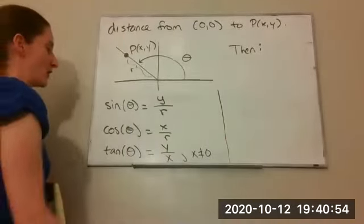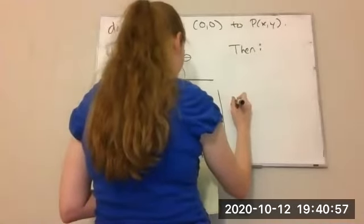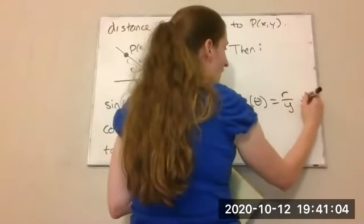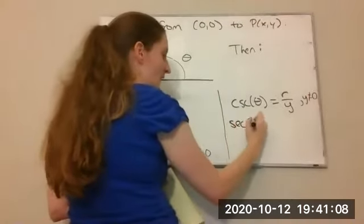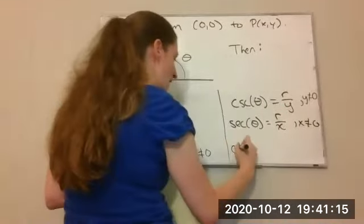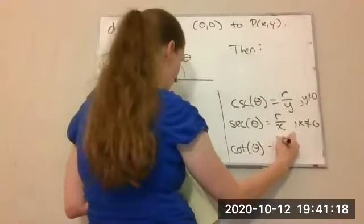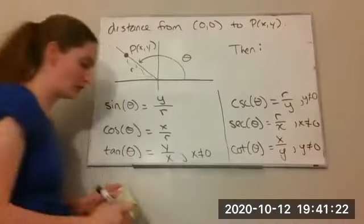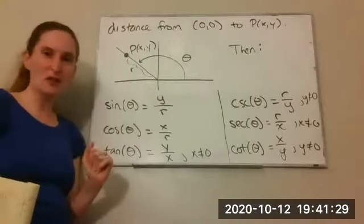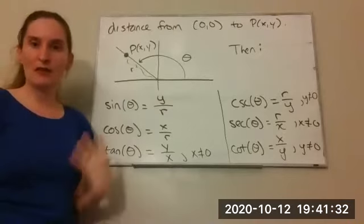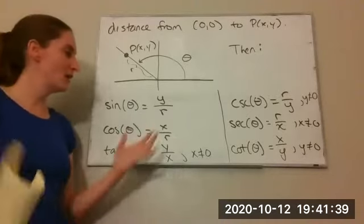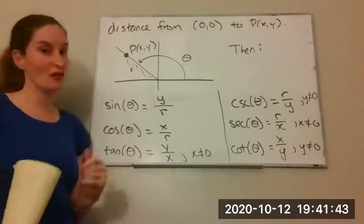Now I can get all of my other trig functions. Cosecant — remember cosecant is 1 over sine — so I get r over y, as long as y is not zero. My secant is 1 over cosine, so I get r over x, and we need x to not be zero. And my cotangent is 1 over tangent, so I get x over y, as long as y is not equal to zero. All of these definitions can also be applied to acute angles — they are exactly equal to our right triangle definitions with opposite and adjacent. But this is a more general definition that allows us to define our trig functions for any angle.